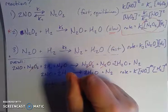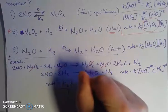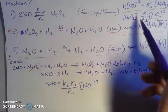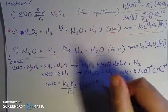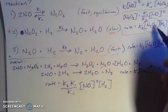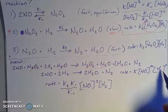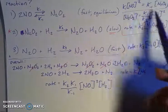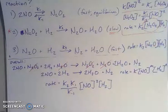Now I can substitute this in, and I get a rate expression: the rate equals k₂ times k₁/k₋₁ times [NO]² — that's coming from the equilibrium substitution — times [H₂], that's coming from the slow step. So n equals 1 for hydrogen, and I've found that m equals 2 based on the relationship between N₂O₂ and NO.